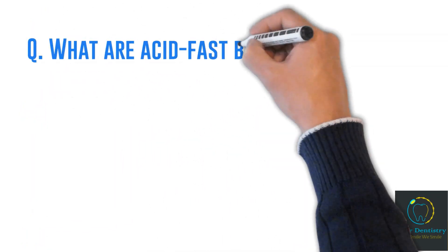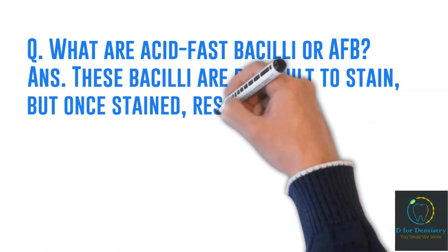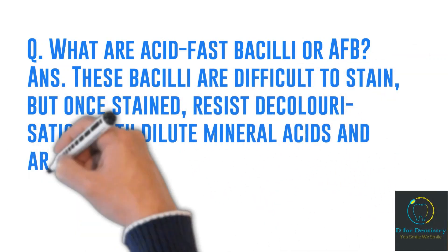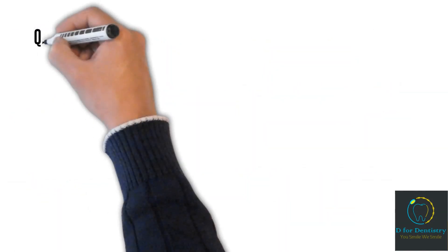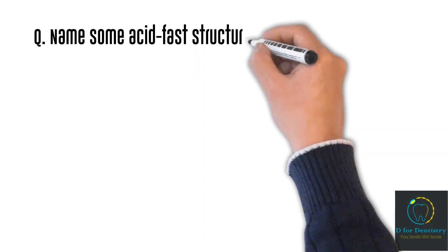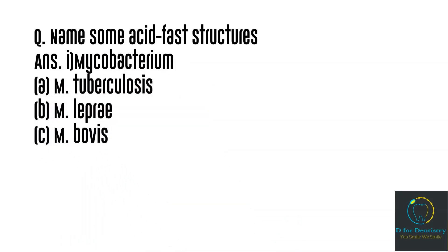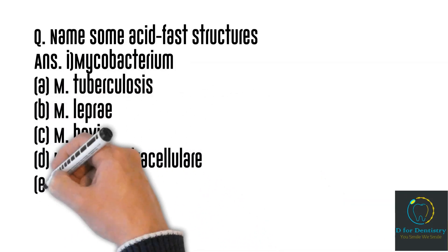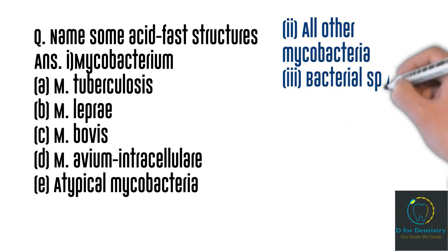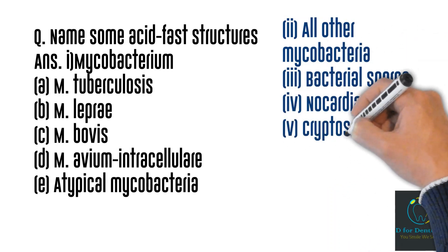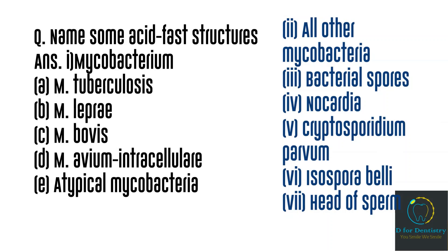Question: What are acid fast bacilli (AFB)? These bacilli are difficult to stain, but once stained, resist decolorization with dilute mineral acids and are therefore called acid fast bacilli or AFB. Name some acid fast structures: Mycobacterium tuberculosis, Mycobacterium leprae, Mycobacterium bovis, Mycobacterium avium-intracellulare, some atypical mycobacteria, all other mycobacteria, bacterial spores, Nocardia, Cryptosporidium parvum, Isospora belli, and the head of sperm. This is a very important and frequently asked question.